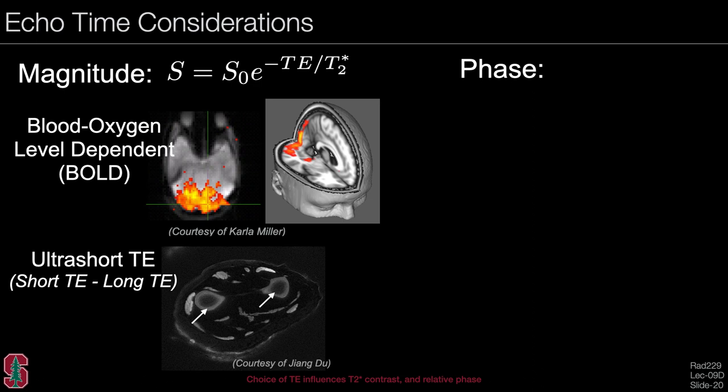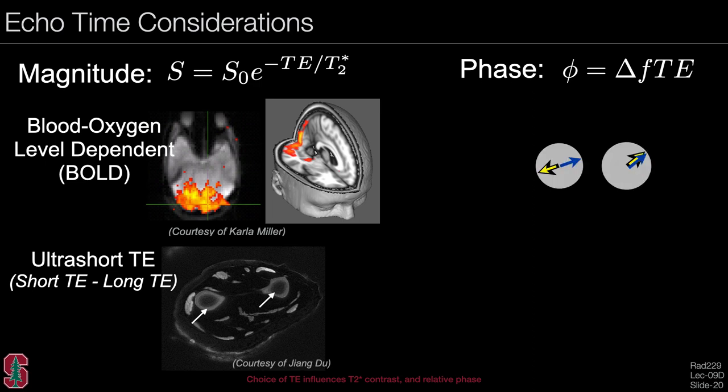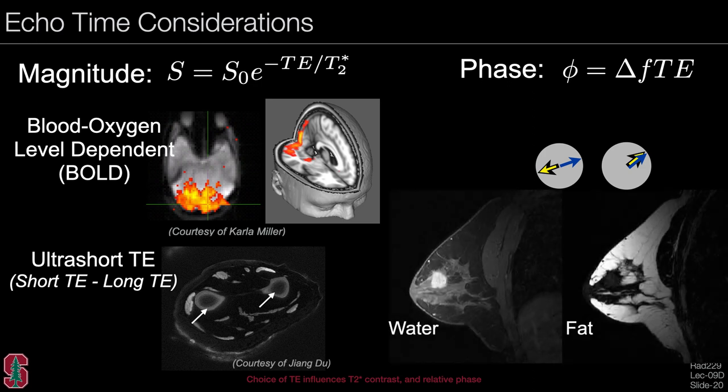Looking at phase considerations of echo time: the phase is the frequency variation times the echo time. A very common use of this is for fat-water imaging, where we acquire in-phase and out-of-phase images, which can be used to separate out the water component and the fat component in images.